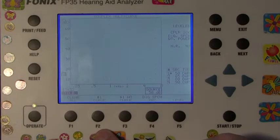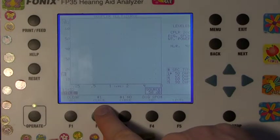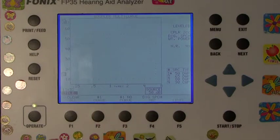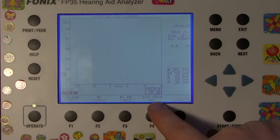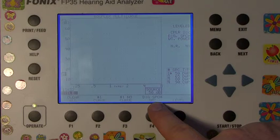Above the F2 button on the screen should read Curve 1. If not, press F2 repeatedly until Curve 1 is shown. Above the F4 button on the screen should read Digital Speech, shown as DIG SPCH. If not, press F4 repeatedly until Digital Speech is shown.